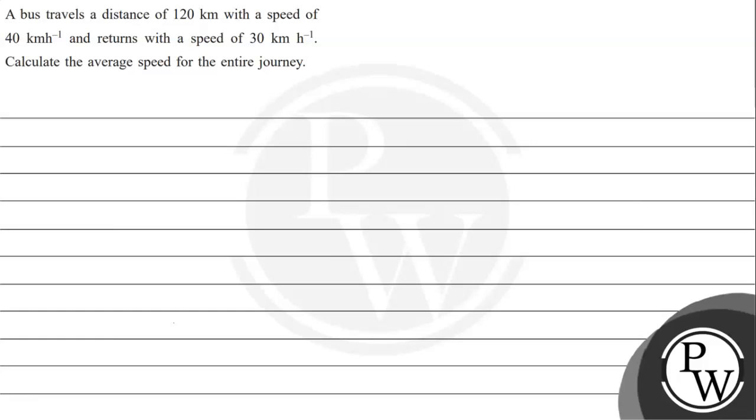Hello, let's read the given question. The question says: a bus travels a distance of 120 km with a speed of 40 km per hour and returns with a speed of 30 km per hour. Calculate the average speed for the entire journey. So this question, the key concept we need to understand is the concept of average speed.